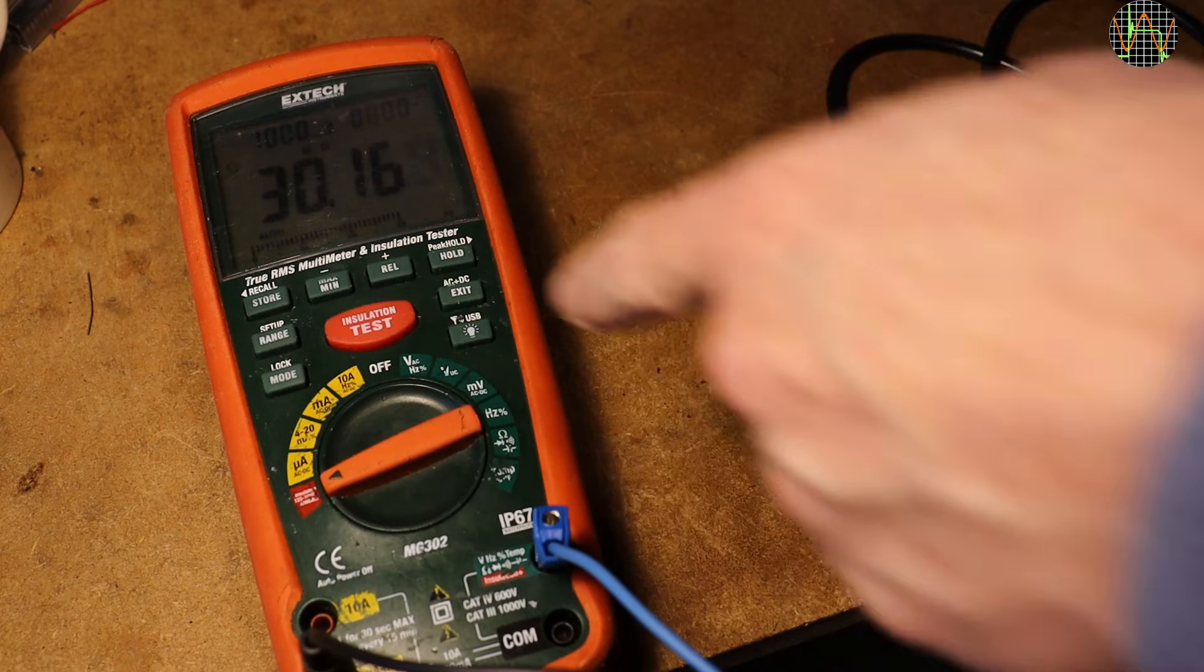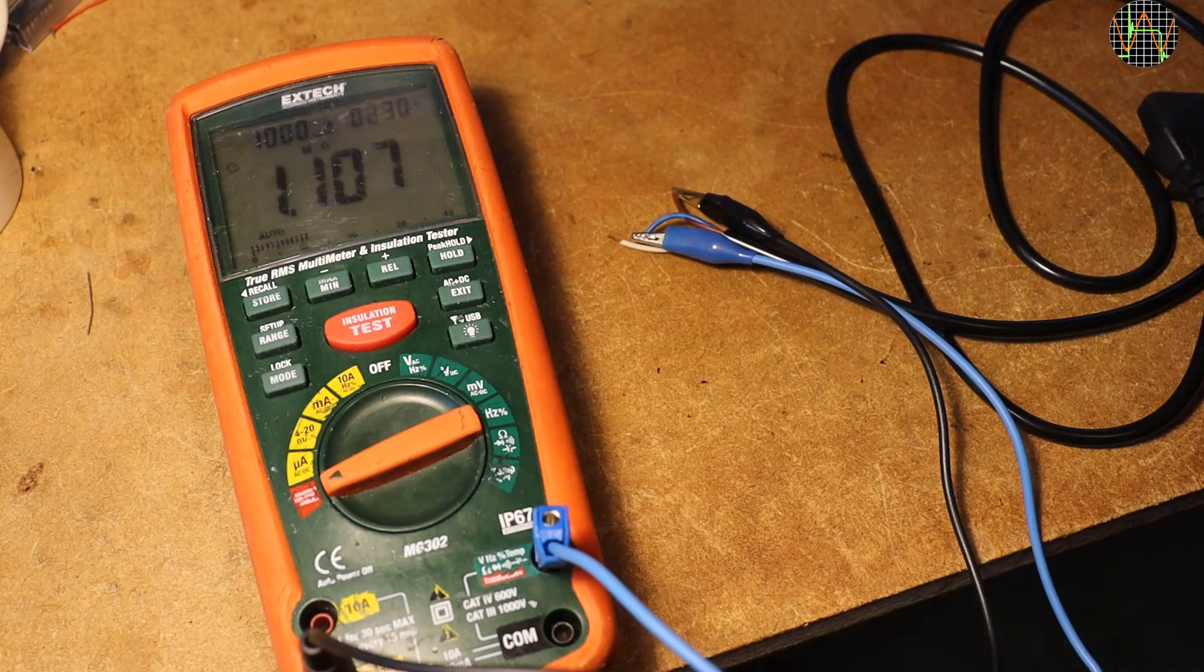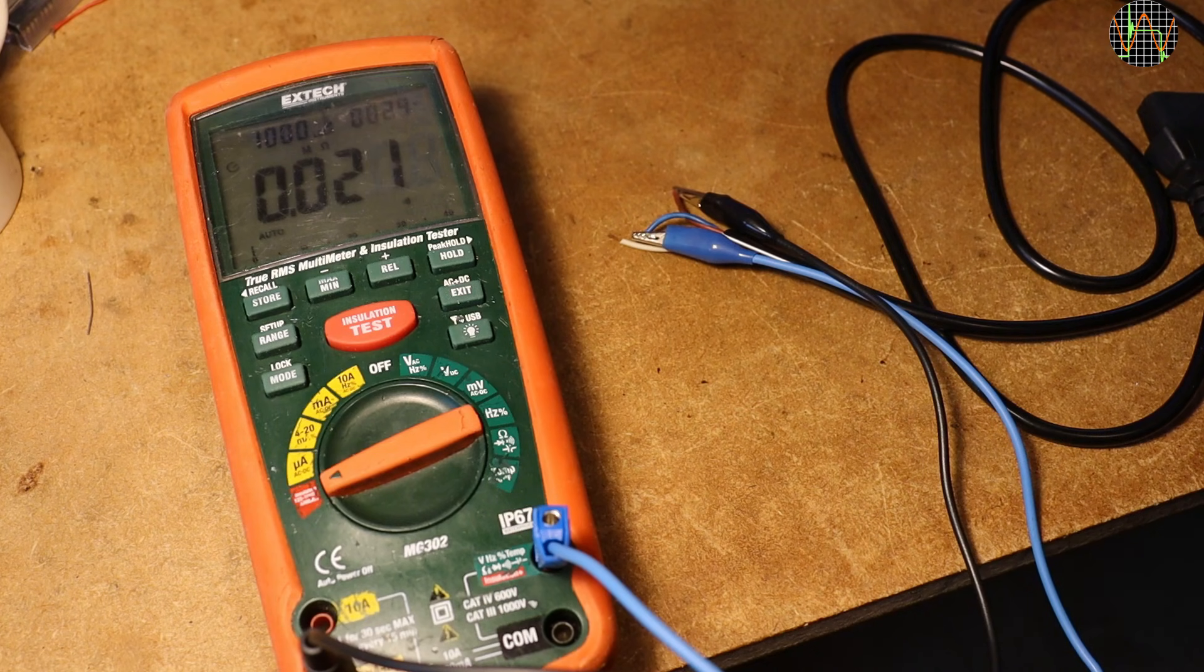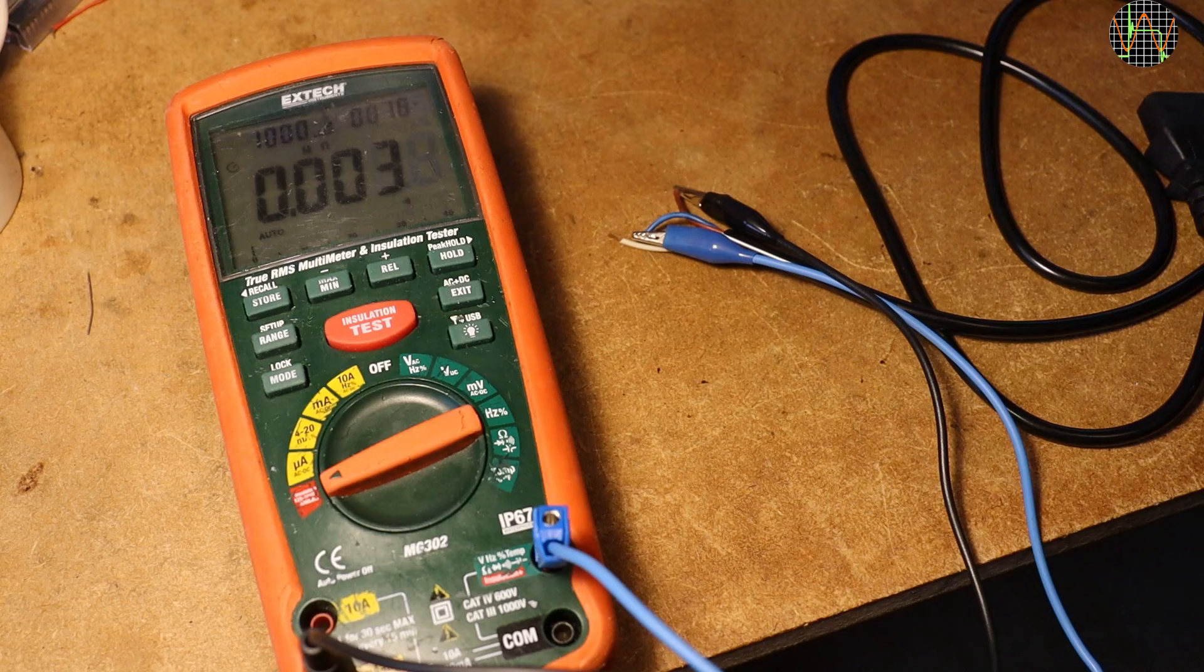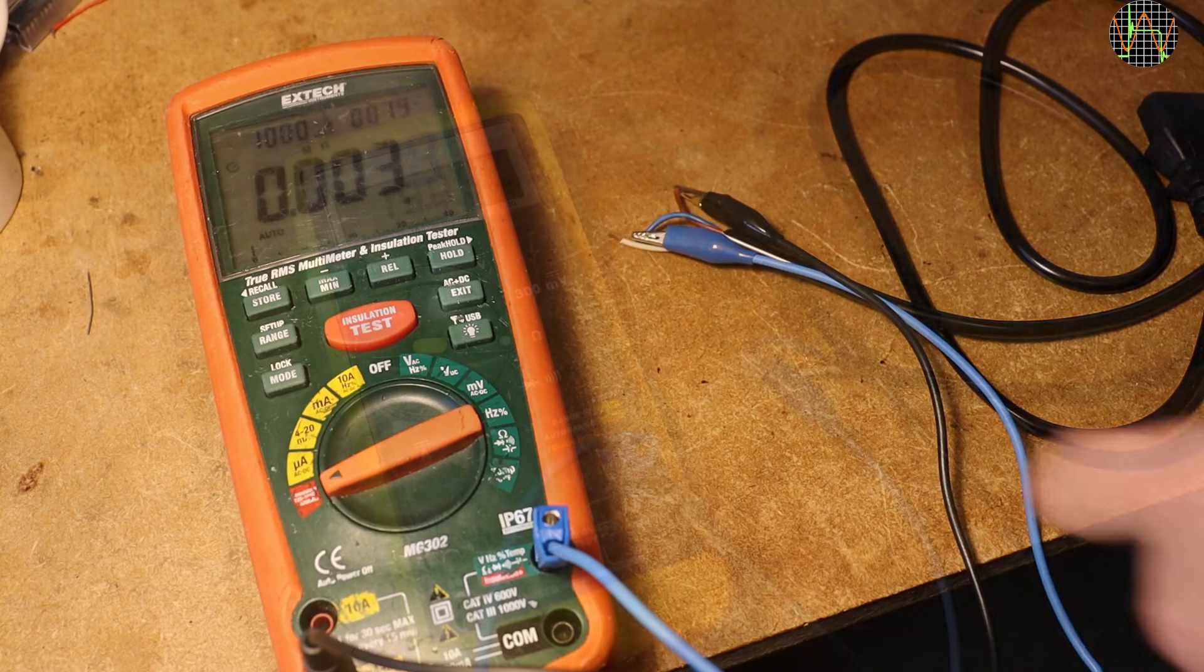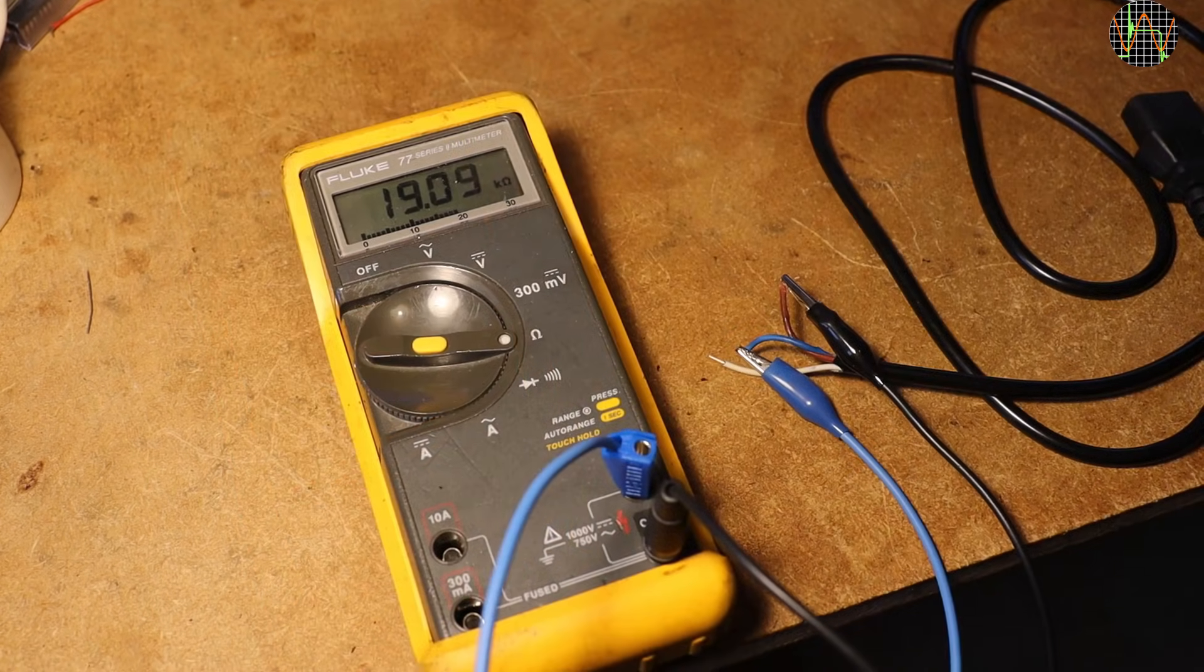Just for fun, I repeated the Extech 1000V test on the cable after it had flashed over. Sure enough, the resistance is so low that the Extech in insulation mode can hardly measure it. A more accurate low voltage reading says it is now 19 kΩ.